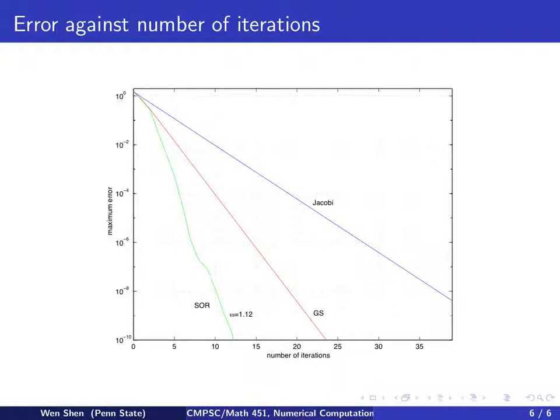So to conclude, we give this plot of error against number of iterations for all three methods after many iterations.